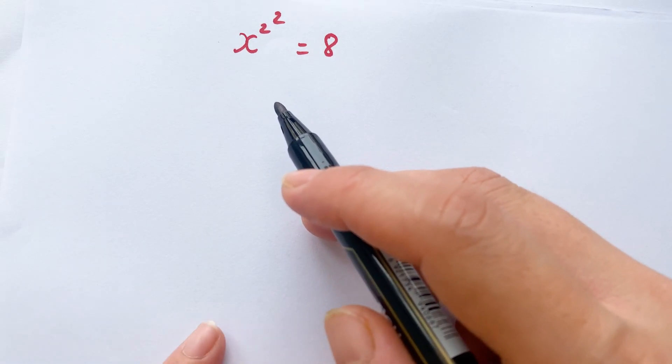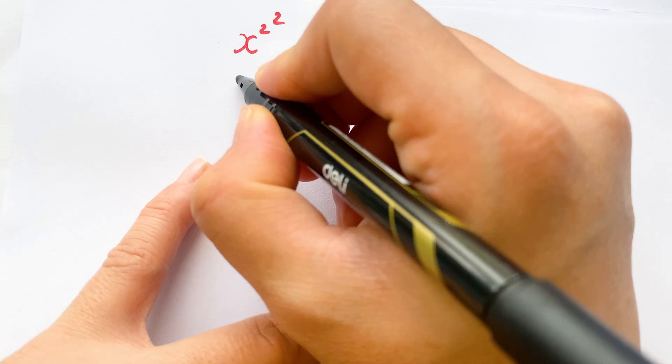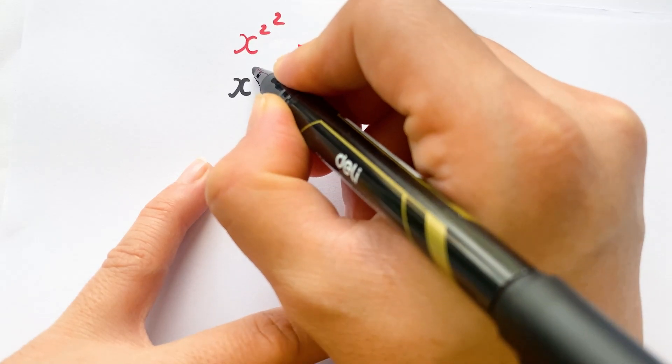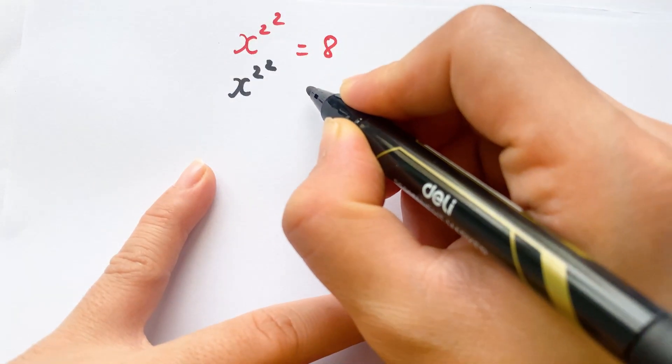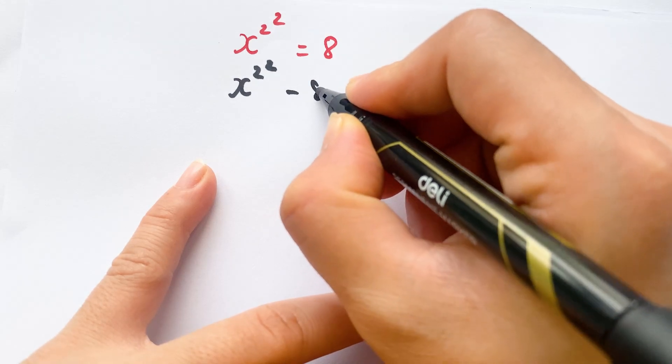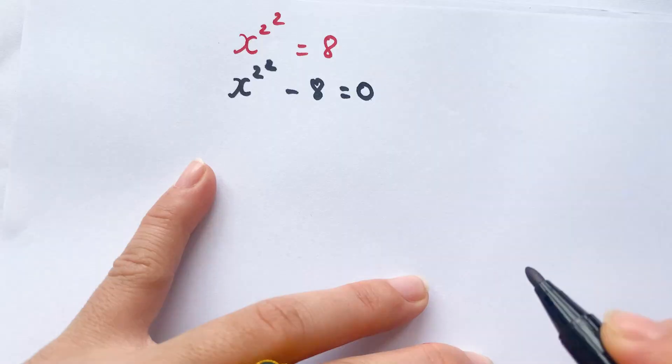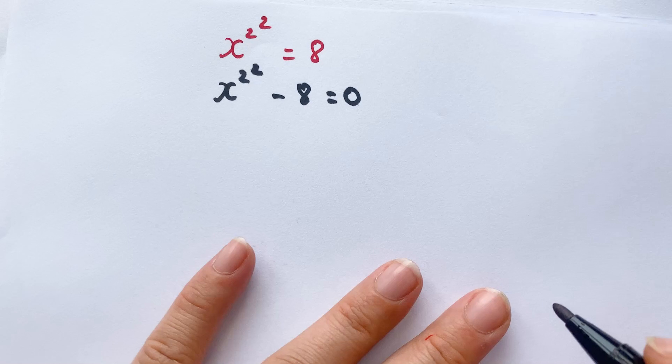For the equation, we have x^(2^2) - 8 = 0, right?